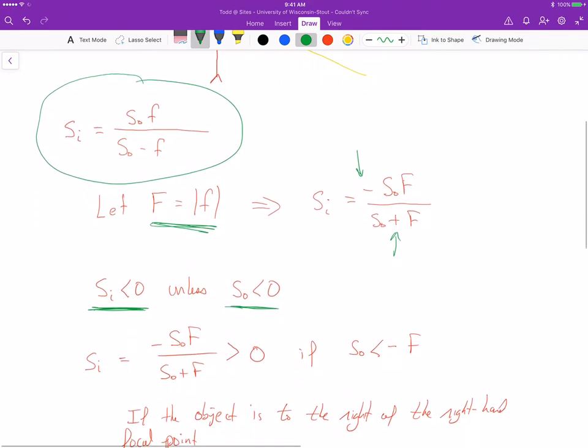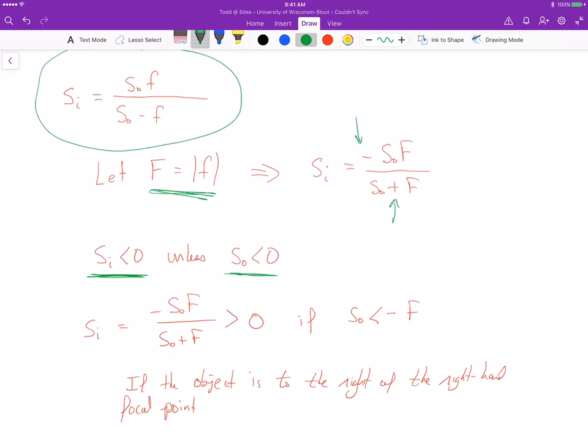And so if we set this out as an inequality like so, then we can actually solve to find where the sign switches. And so SO has to be less than negative F. In other words, we have to have a negative object distance.